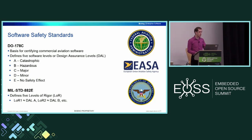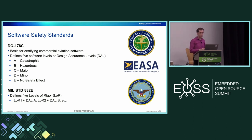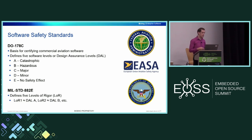To get started with software safety standards, the primary one I'm going to be talking about today is DO-178C. That's the fundamental standard for commercial avionics software, used both in North America by the FAA and in the EU by EASA. When you're talking about certifying safety-critical software in the avionics industry, that's really what we're talking about. DO-178C defines five software levels, or design assurance levels, called DALs for short. These five levels define a number of requirements for how you need to develop your software and how you need to prove that it's safe.